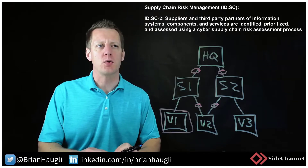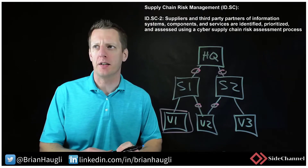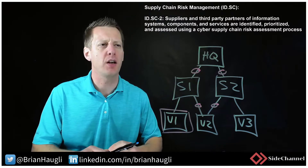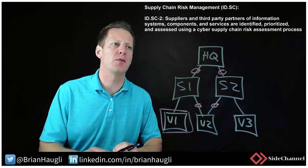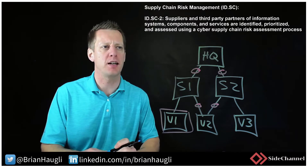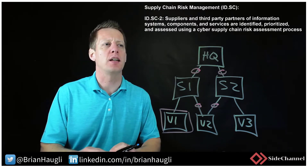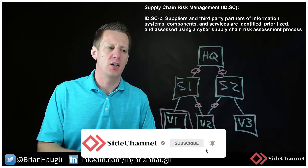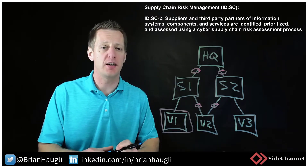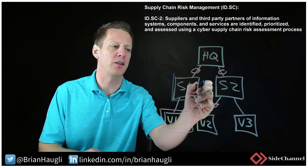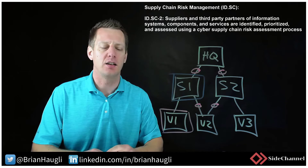The next subcategory is Control Side of Supply Chain Risk Management, IDSC2: suppliers and third-party partners of information systems components and services are identified, prioritized, and assessed using a cyber supply chain risk management process. Starting at the beginning — do you even know who your suppliers are? If you don't know, go do that now before moving on anywhere else.